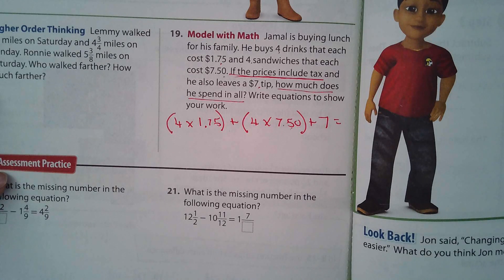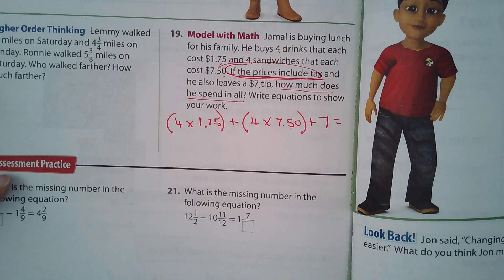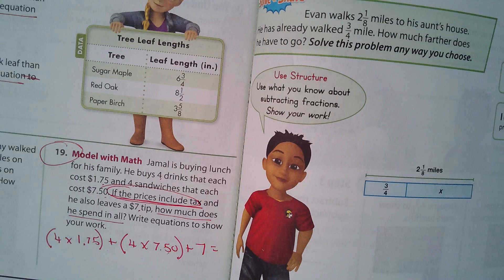Just scratch out 'to model your work' — just write the equation. Then it says how much longer is the red oak leaf than the paper birch leaf — again, just write the equation. For number 18, Lemmy walked that much and then that much, and Ronnie walked that much — who walked further, how much further? Looks like you're going to be adding. Number 19: Jamal's buying lunch for his family — four drinks at a certain cost, four sandwiches at a certain cost, and he leaves a seven-dollar tip.